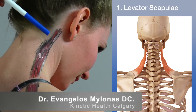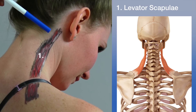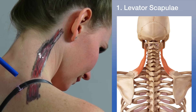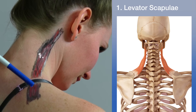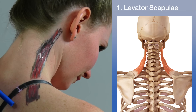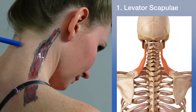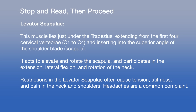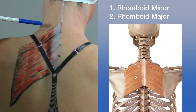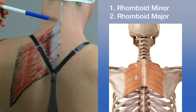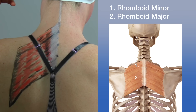The serratus posterior superior runs from the spinous processes of C7 to T3 and inserts on the first five ribs; its action is to elevate the ribs and thereby aid in inspiration. The serratus posterior inferior runs from the spinous processes of T12 to L2 and inserts on the four lower ribs; it depresses the ribs and thereby aids in expiration.